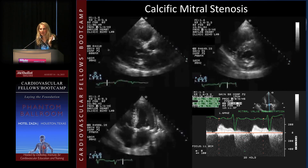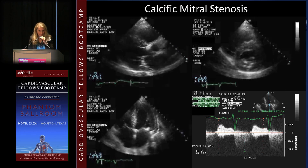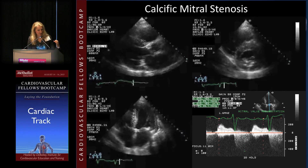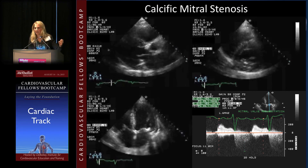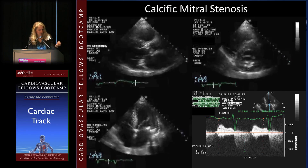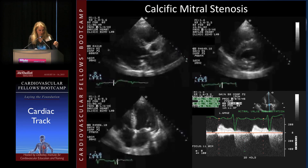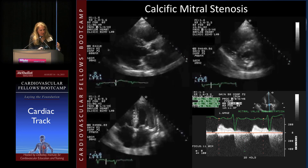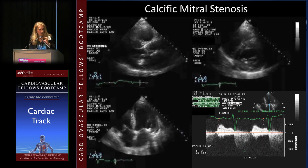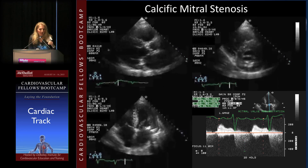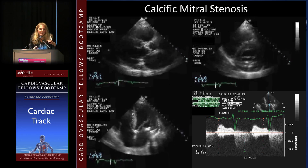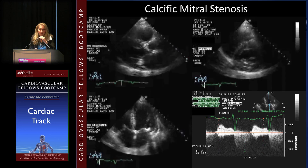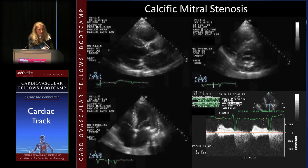The most common form of mitral stenosis in the United States is calcific mitral stenosis. It involves calcification of the annulus, always starting at the posterior lateral annulus, capturing the posterior mitral valve leaflet so it becomes restricted and doesn't move much. Because it involves the annulus and not the leaflets themselves, the anterior leaflet still opens nicely. The left atrium isn't very large, and on Doppler we frequently find no more than mild mitral stenosis with this type of mitral valve disease.